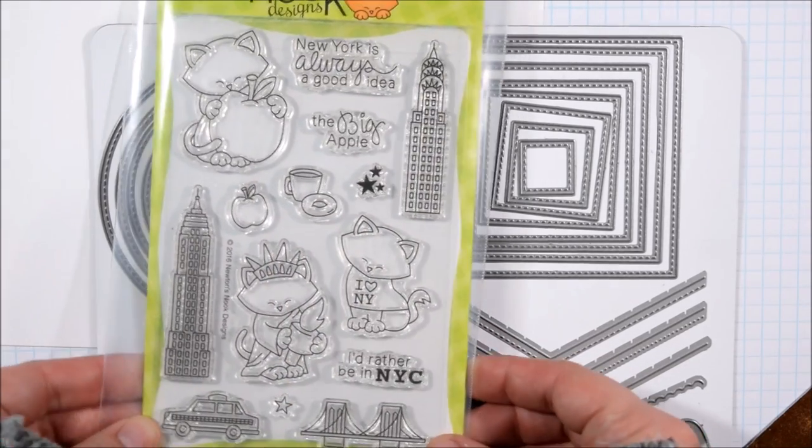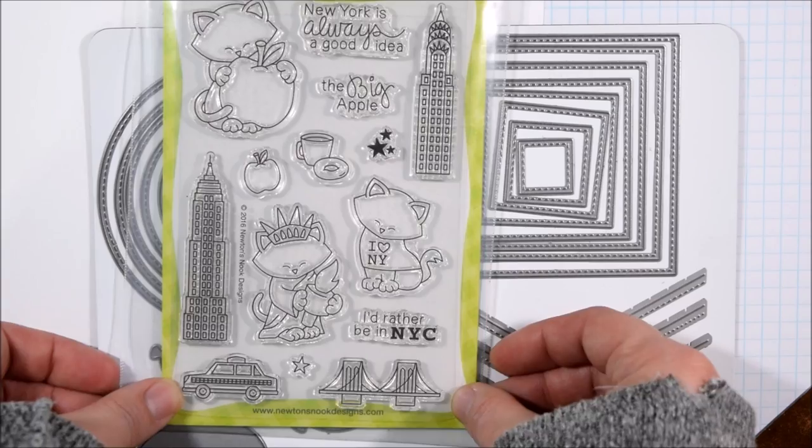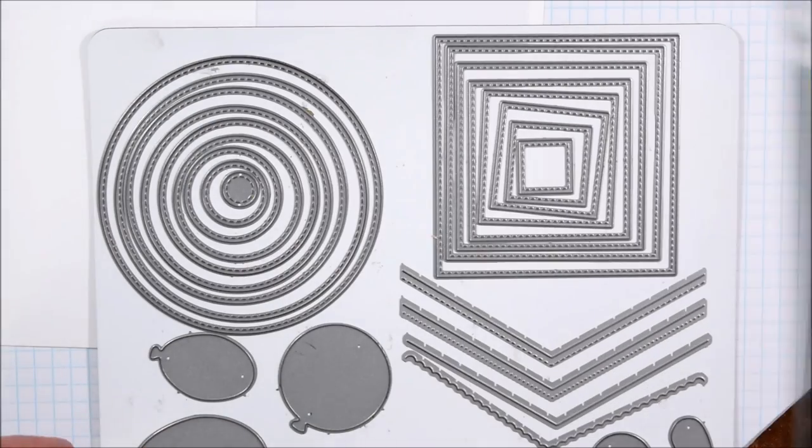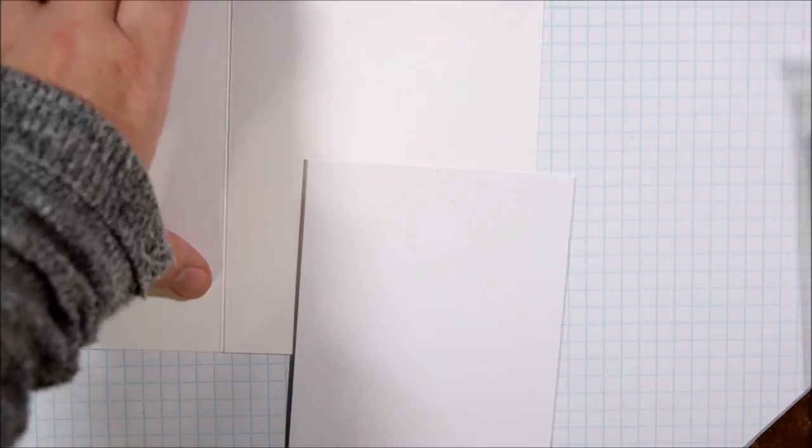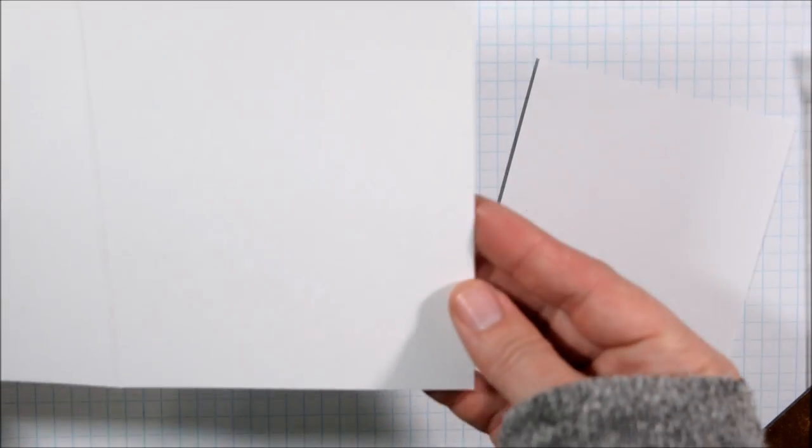Newton has been traveling in a few stamp sets and here is the latest one where he is headed to New York. For today's card I wanted to create a spinner card and I'm going to focus more on how I made the spinner part and less on some of the other elements of the card.